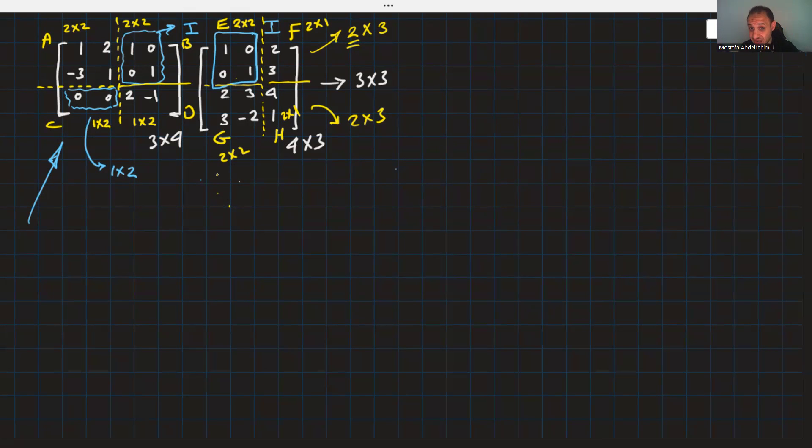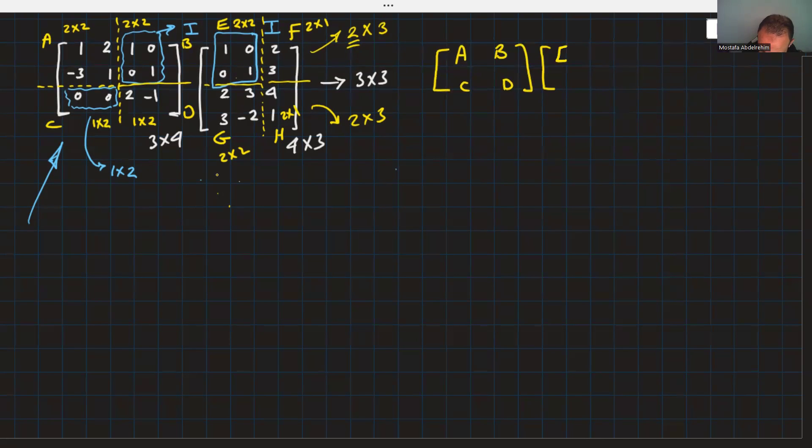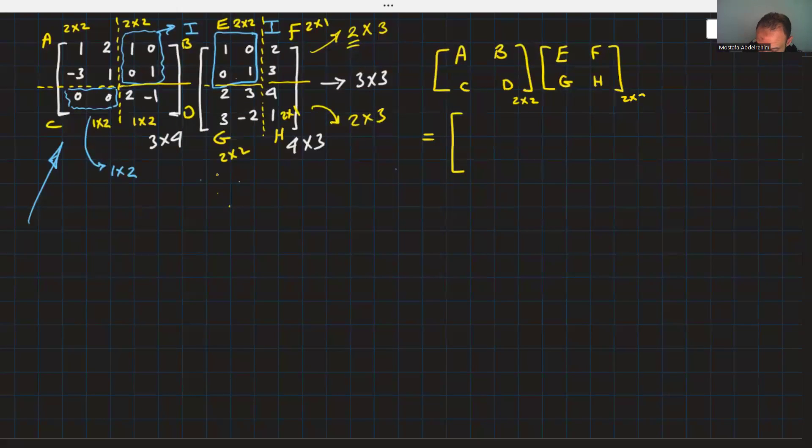Let's write now this multiplication in that way. We're going to write the matrix on the left in that way, A, B, C, D. The matrix on the right, same way, E, F, G, H. So, this is 2 by 2, this is 2 by 2. Forget now about the original question. The result should also be 2 by 2.